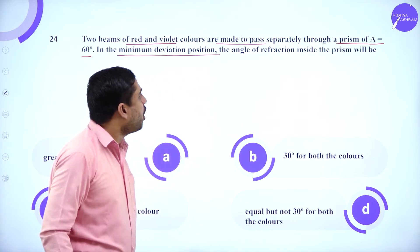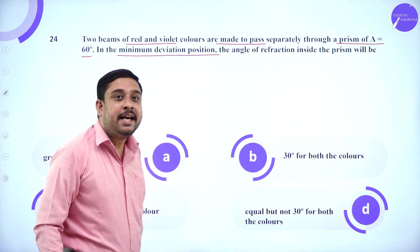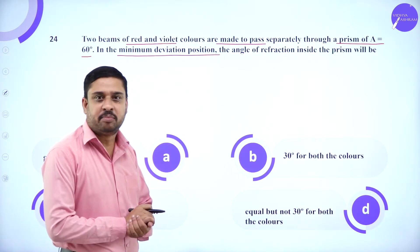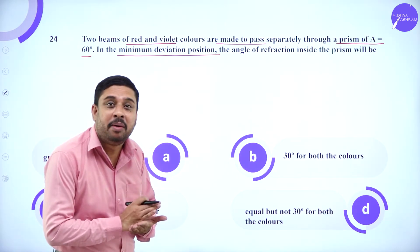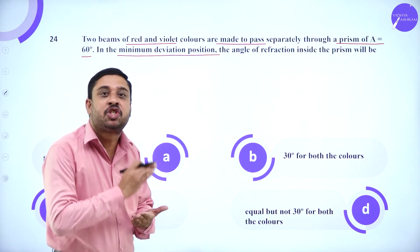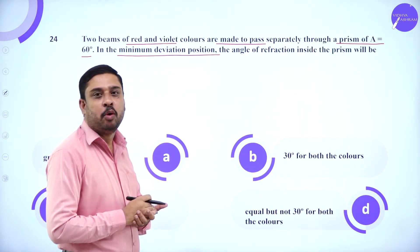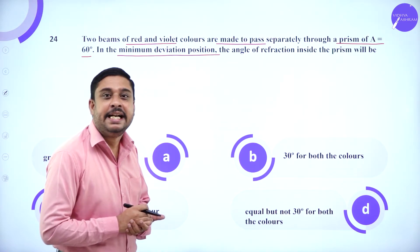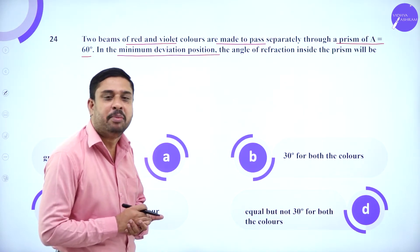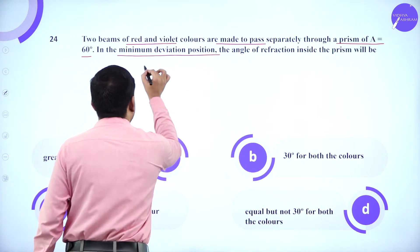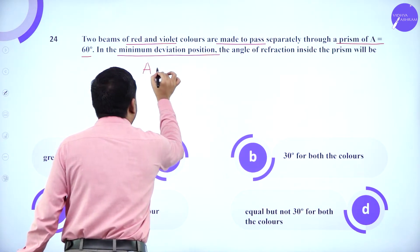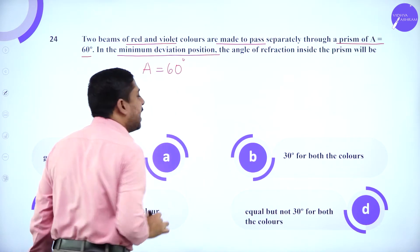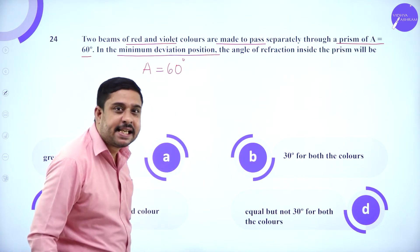At the minimum deviation position, we need to find the angle of refraction inside the prism. The angle of the prism is given as 60 degrees.